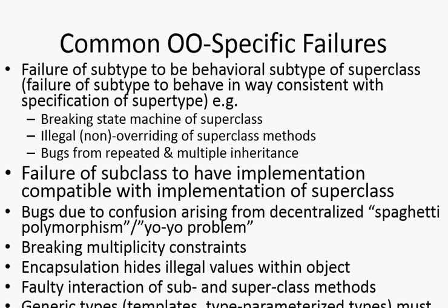The superclass evolves, perhaps, in a way that throws the subclass off. Another problem in object-oriented code is that a subclass calls off to a method executed in the superclass, which then calls off to an overridden method executed in your class. This back-and-forth of execution between your class and the superclass can be hard to understand and hard to test.